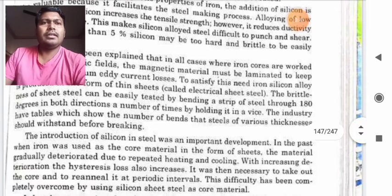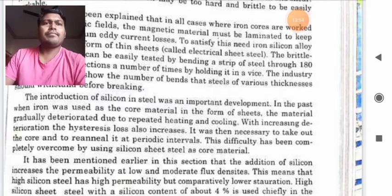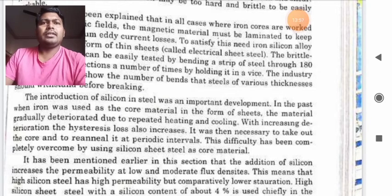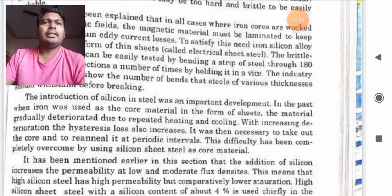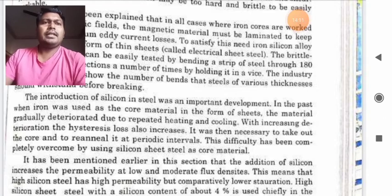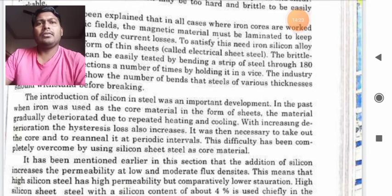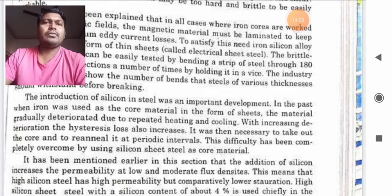The introduction of silicon in steel was an important development in the past when iron was used in the core material in the form of sheets. The material gradually deteriorated due to repeated heating and cooling. With increasing deterioration, the hysteresis losses also increase. It was then necessary to take out the core and re-anneal it at periodic intervals. This difficulty has been completely overcome by using silicon steel as a core material.